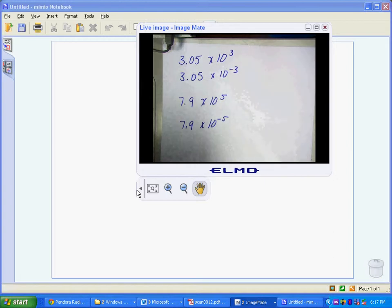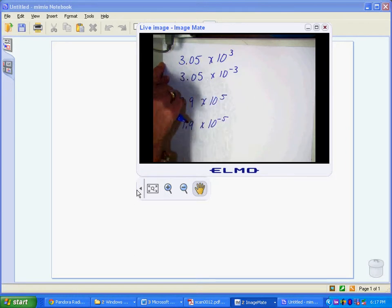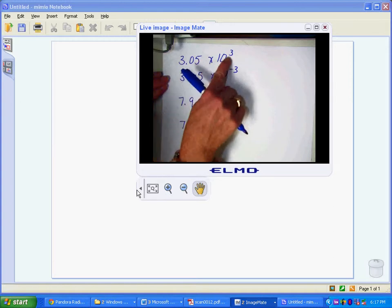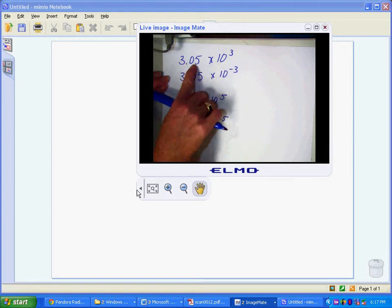So I have this number, 3.05 times 10 to the third power. So what I'm going to have to do is that decimal is going to have to move three places. Question is, which way? If I move it three places this way, I would get a number that's less than 1. But I can't have that because this exponent is positive.